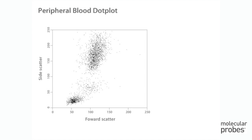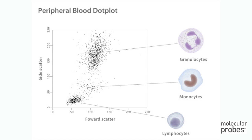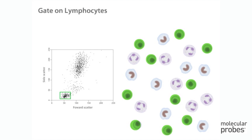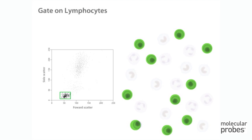Let's look at the first step of the analysis in more detail. To exclude populations that are not relevant, we use a forward scatter versus side scatter dot plot to distinguish populations of lymphocytes, monocytes, and granulocytes. This type of plot uses linear scaling and is not based on any fluorescence signal. Most cell types have scatter properties that help us visualize various subpopulations in this way. Note that the blank area to the left is our forward scatter threshold set to exclude debris from the analysis. The lymphocyte gate is created by drawing a region around the lymphocyte population.